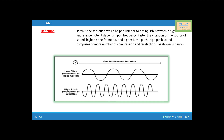The faster the vibration of the source of sound, the higher is the frequency and higher is the pitch. A high pitch sound corresponds to more compressions and rarefactions passing a given point per unit time. The pitch of a female voice is higher than that of a man. This is the wave shape of a low pitch sound and this is the wave shape of a high pitch sound. Low pitch sound has low frequency and high pitch sound has high frequency. This is all about loudness and pitch. Thank you.